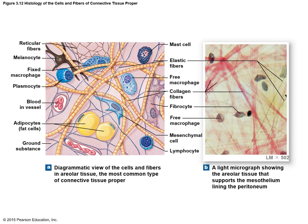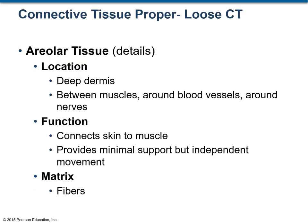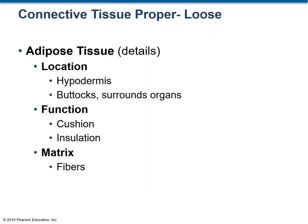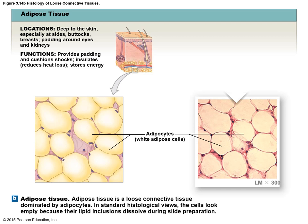This figure contains a diagram and a micrograph showing areolar connective tissue. It is mainly present in the deep dermis and its function is to connect the skin to the muscle and help in movement. This figure shows the histology of areolar connective tissue. Adipose tissue is mainly present under the skin in the hypodermis, and it often surrounds internal organs providing a cushioning effect. Its function is cushioning and insulation. Adipose cells look like signet rings because the lipid droplet in the cytoplasm pushes the nucleus to the periphery near the cell membrane.